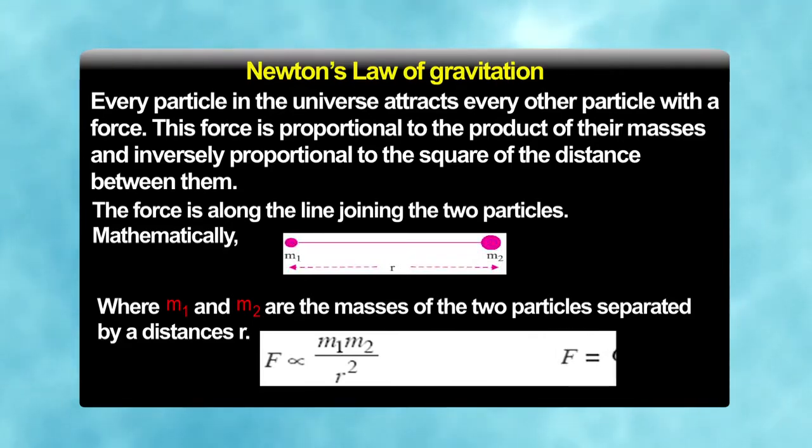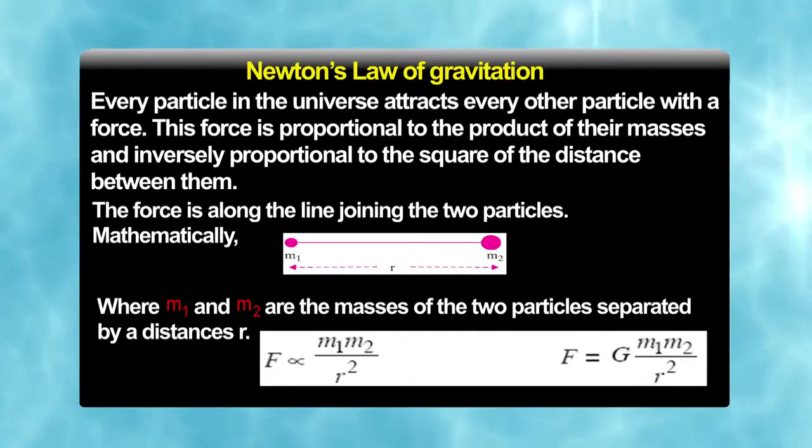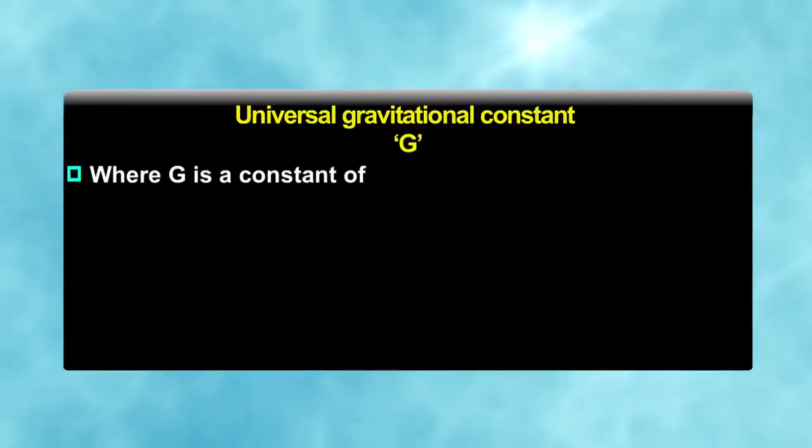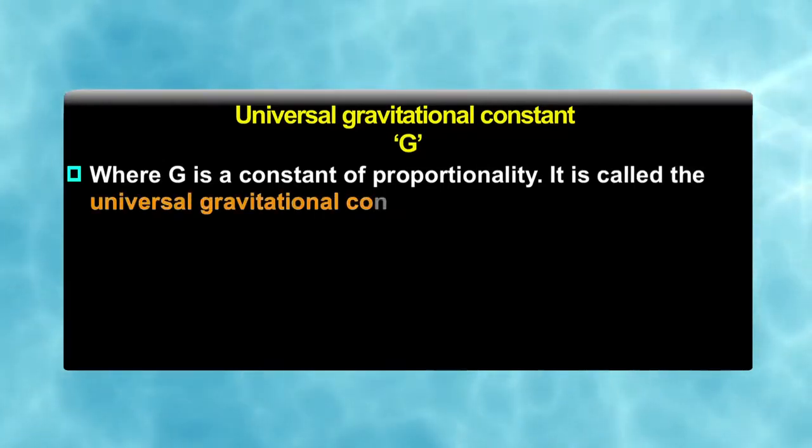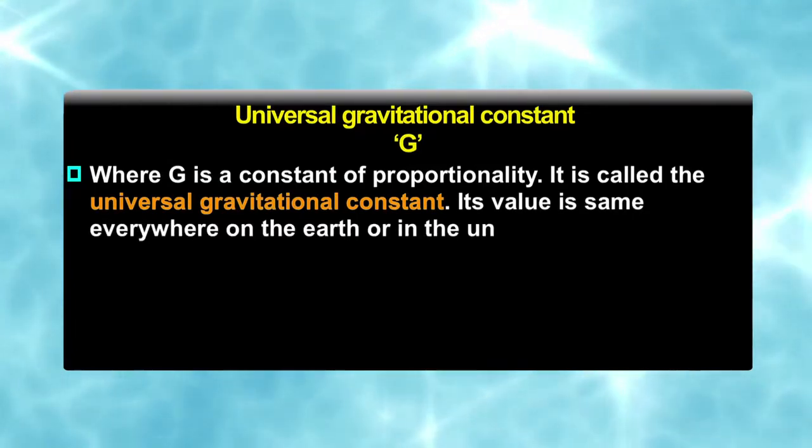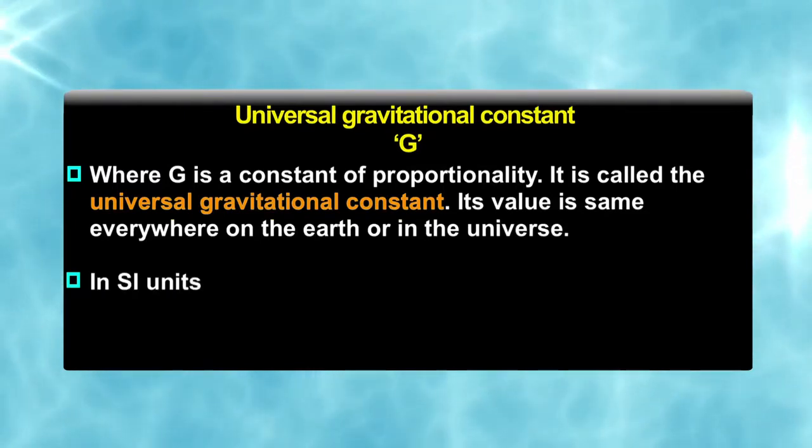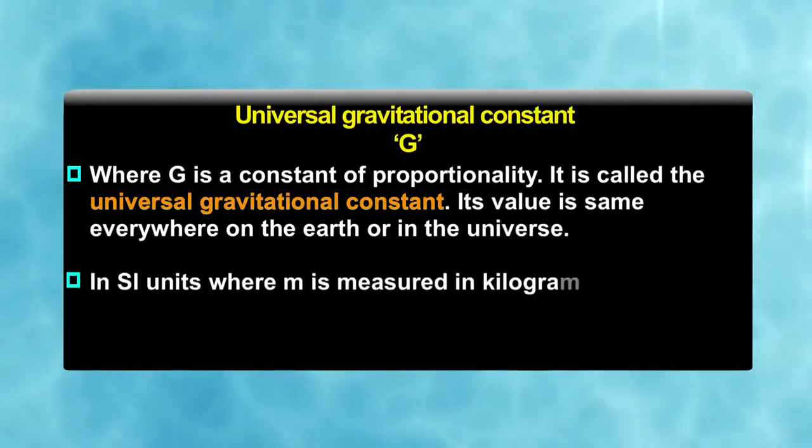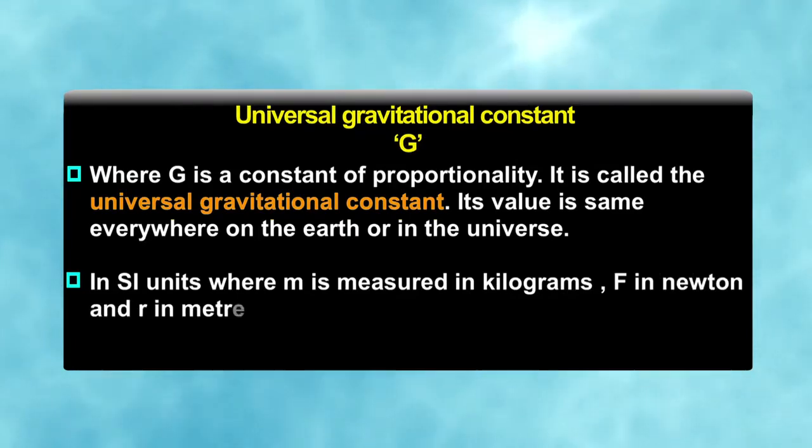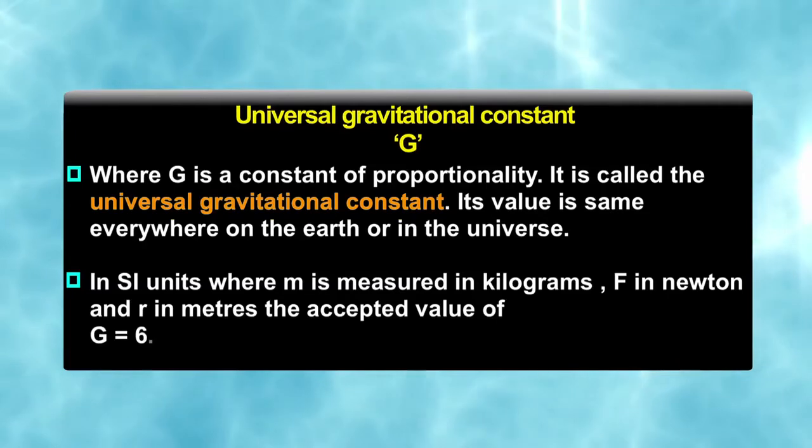Let us know what is G. Well, G is a constant of proportionality. It is also called the universal gravitational constant. Its value is same everywhere on the earth or in the universe. In SI units, where m is measured in kilograms, F in Newton and r in meters, the accepted value of G is 6.67 × 10⁻¹¹ Newton meter square per kilogram square.